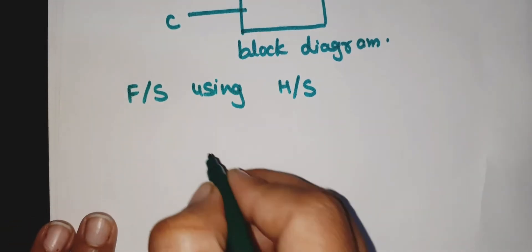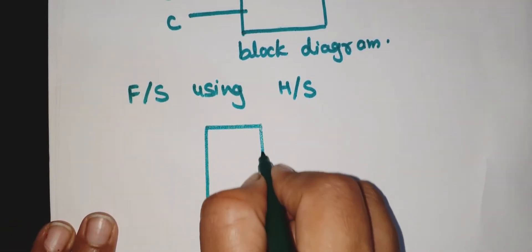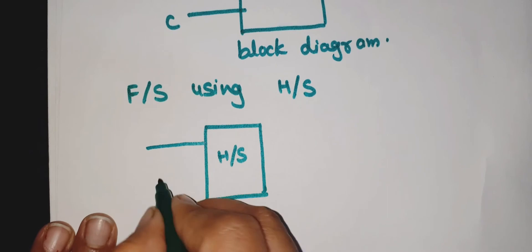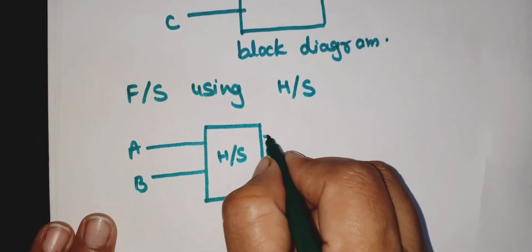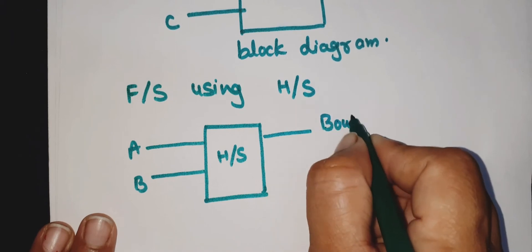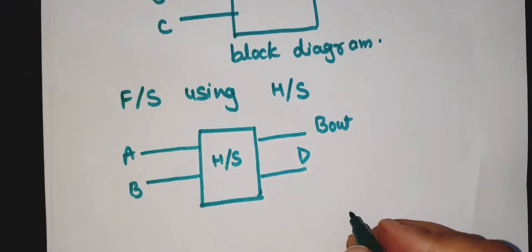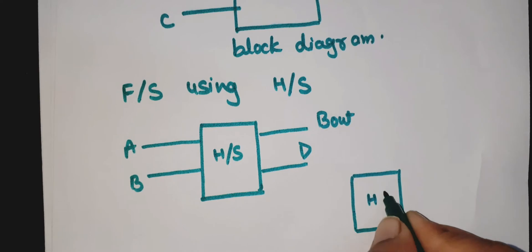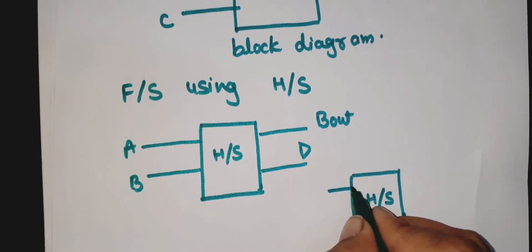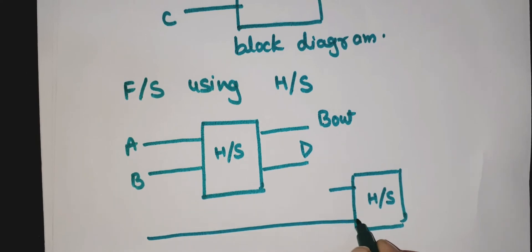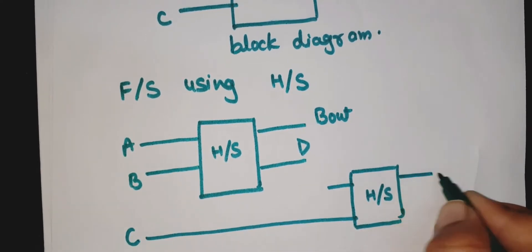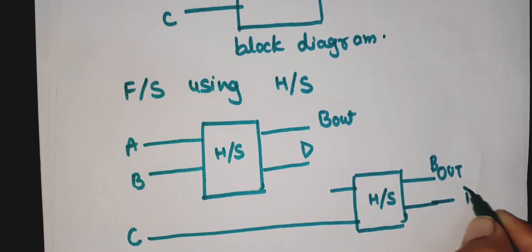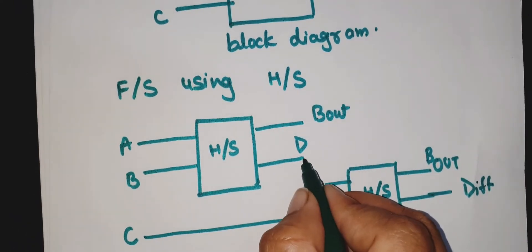First I will draw a block diagram. This is one half subtractor — this is the difference. The second half subtractor: the first input and second input will give two outputs, B_out and final difference.